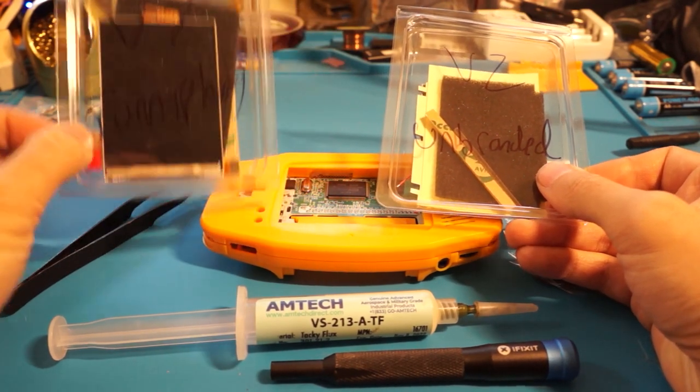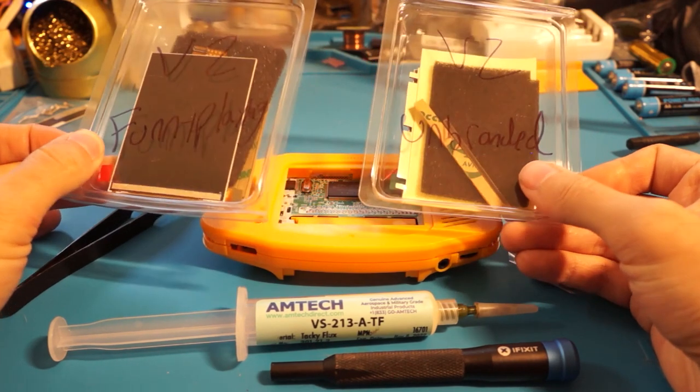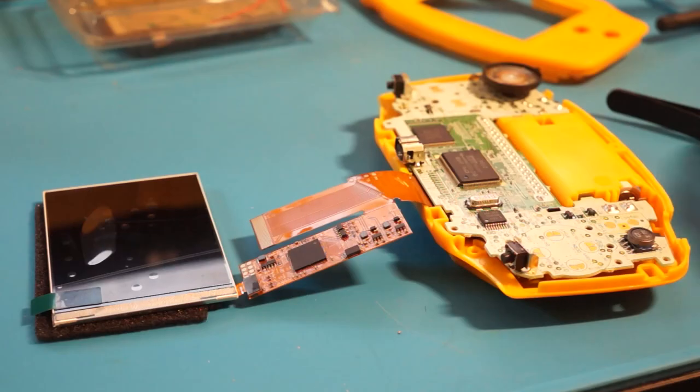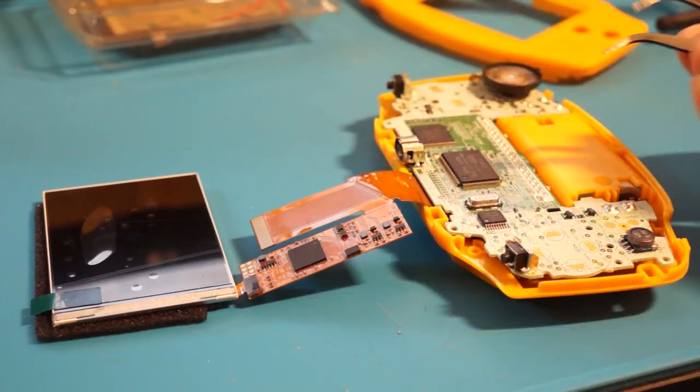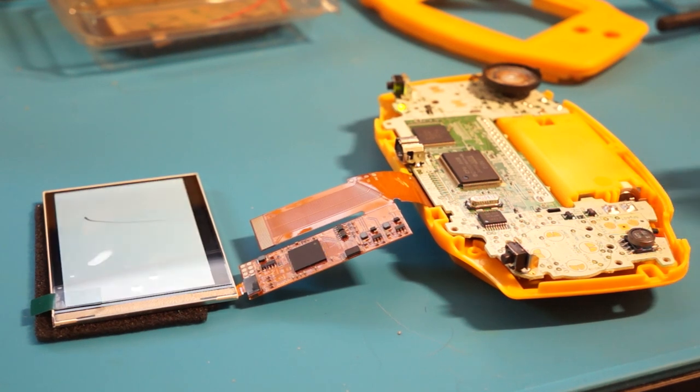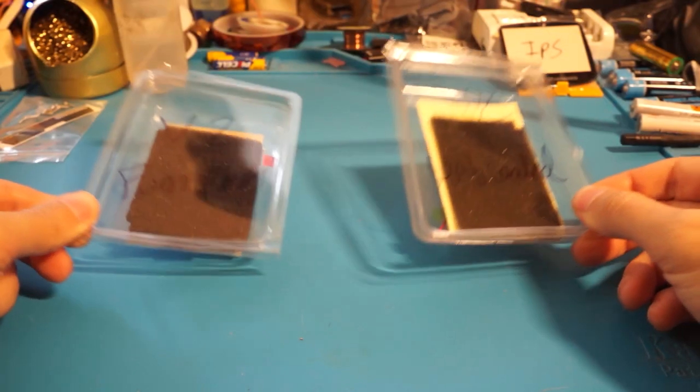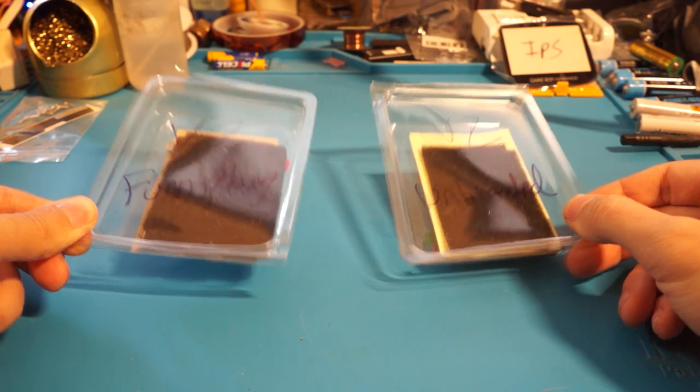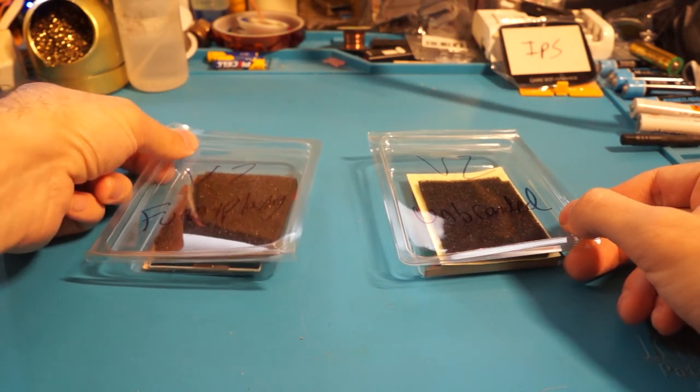Before getting started, you'll want to fully disassemble your Gameboy and perform an IPS dry test. It's very important to ensure everything is functional before performing this installation process. Links to our disassembly guide, our dry test guide, and all of the required supplies for this install will be located in the description.